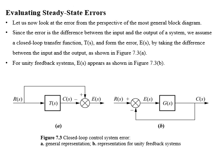Let us evaluate how to find steady-state error for a unit feedback system. Figures A and B both represent closed-loop control systems for error. Both block representations are used to find the steady-state error. Error is the difference between input and output. We can assume a closed-loop transfer function T(s) as in figure A and find the error by taking the difference between input and output. If we have a unit feedback system, the error appears as shown in figure B.